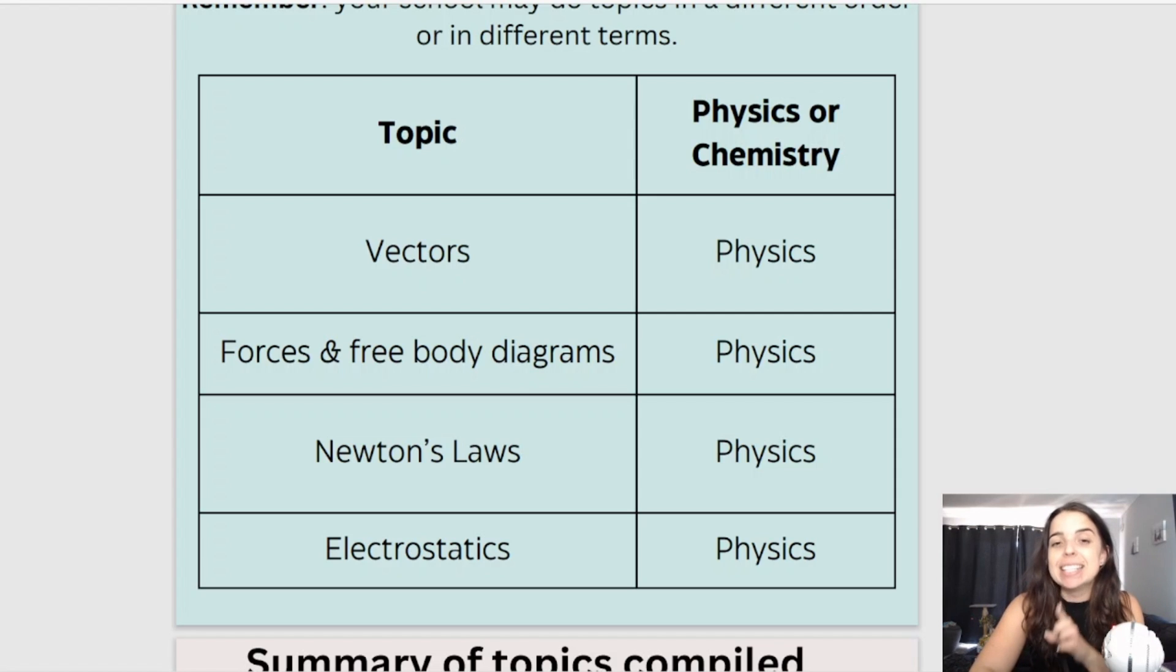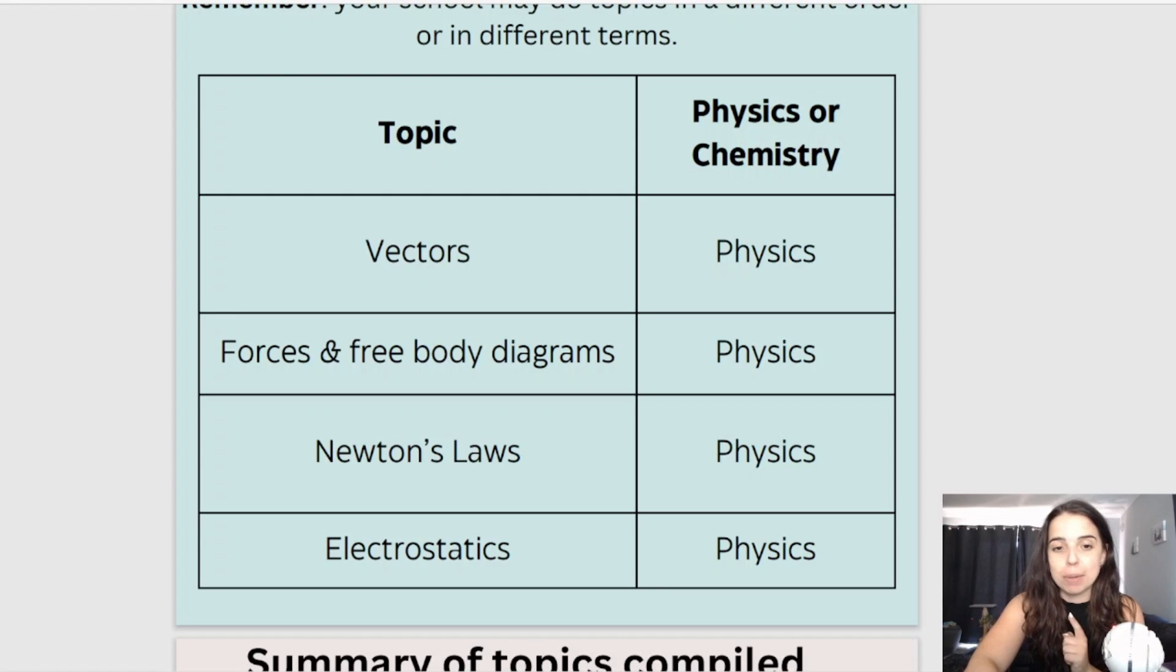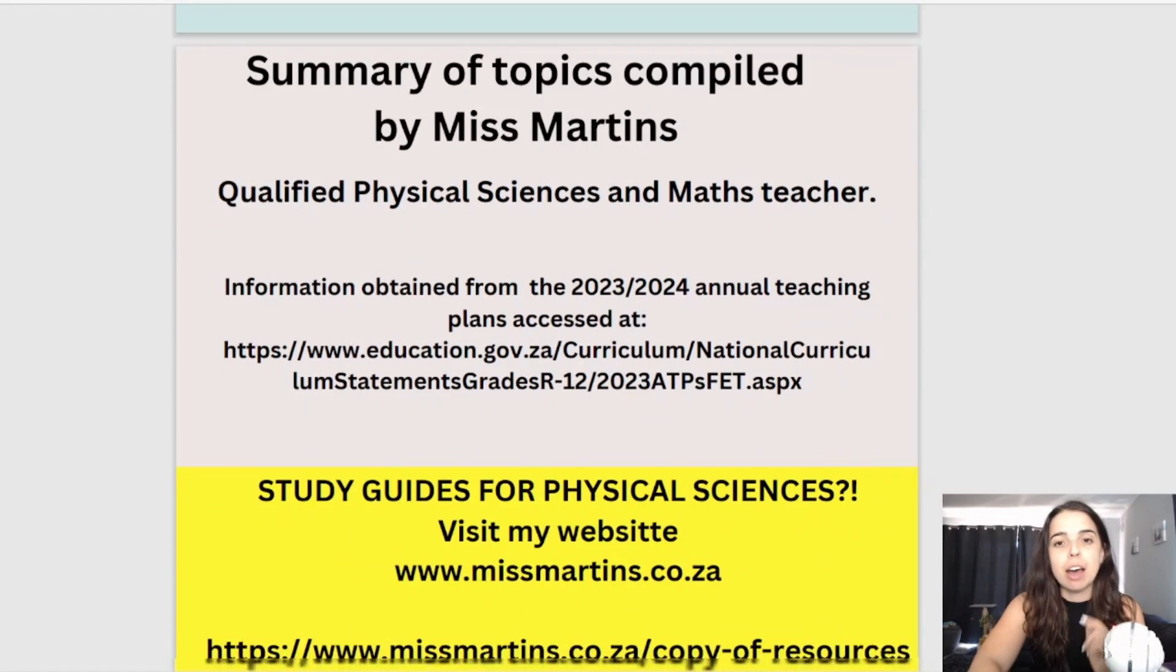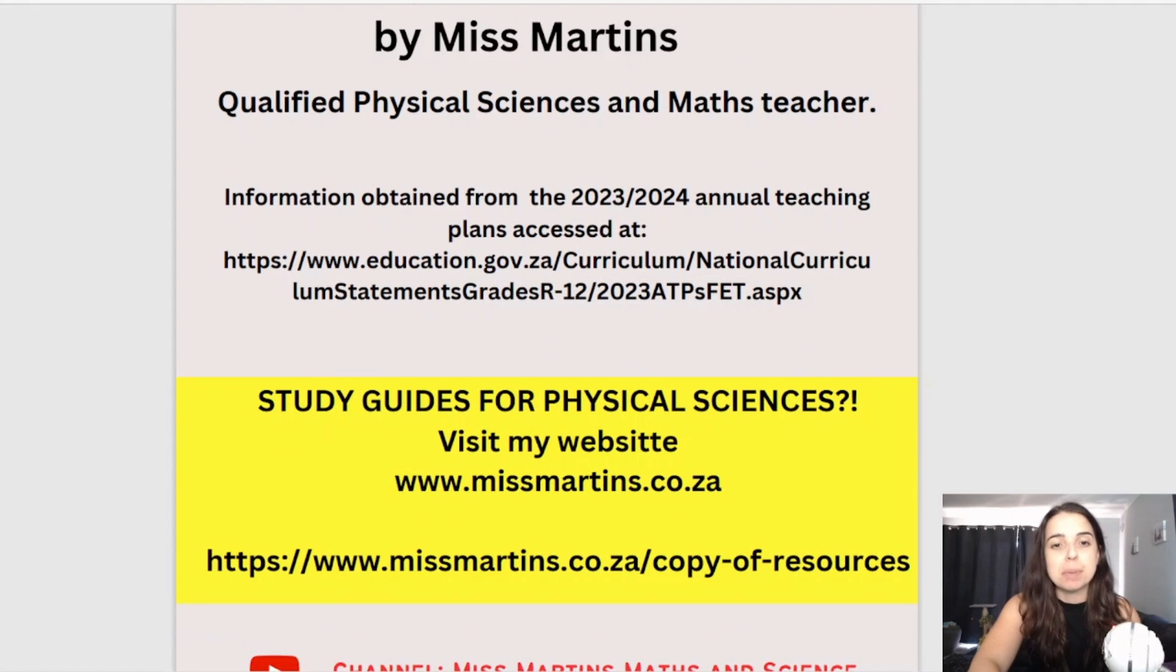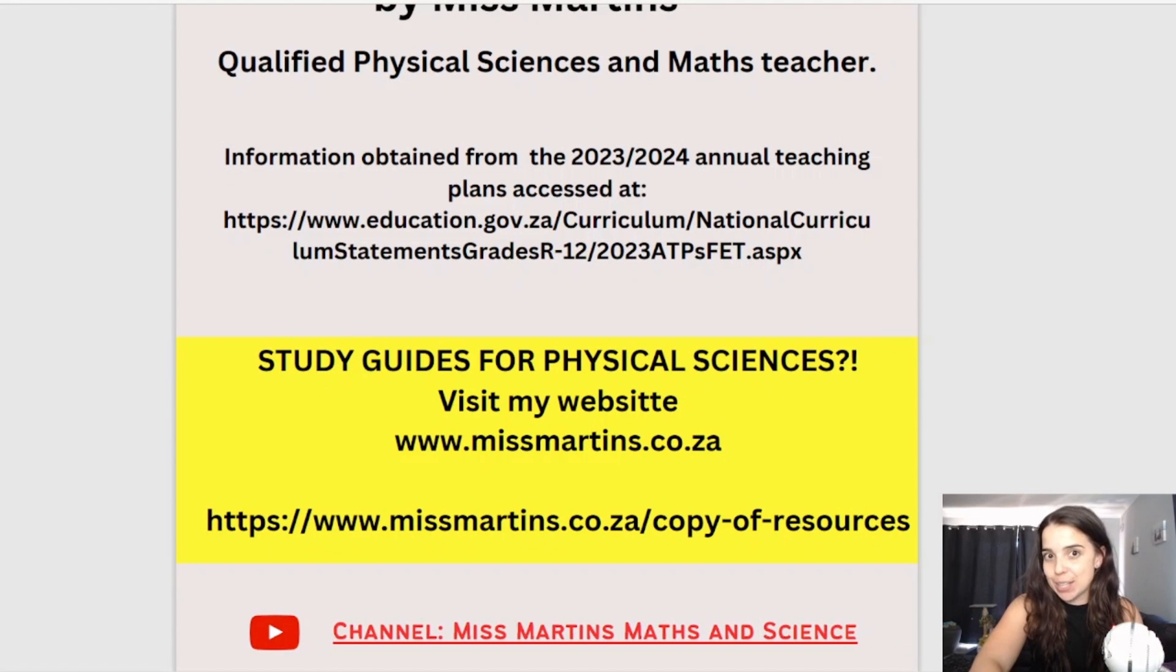But one thing to highlight is that if you follow the ATPs, if your school follows the ATPs, you can see that term one is entirely physics. There's no chemistry, which is interesting. I know some people prefer the one section or the other, but let's jump into a summary or the breakdown of the topics. Now just remember that I compiled these from the official ATP documents. You can access the full documents in the link below as well.